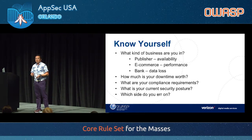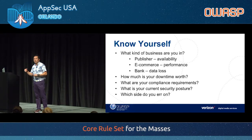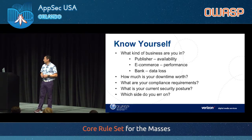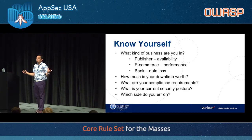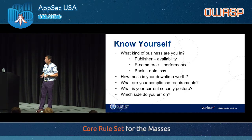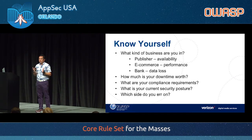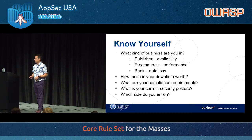Banks may have different concerns — more focused on preventing credit card data or social security data from leaving the system, so they may be more concerned about inspecting HTTP responses. How much does downtime cost you? For some companies it's literally a billion dollars an hour; for others it may just be unpleasant. And you may have PCI compliance or other compliance requirements. Most importantly, what's your security posture — are you going to be tighter with some false positives, or looser so you don't negatively impact any legitimate customers?